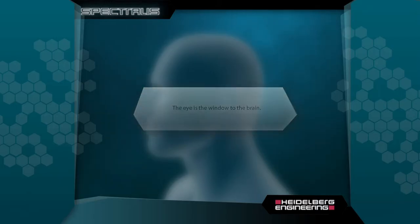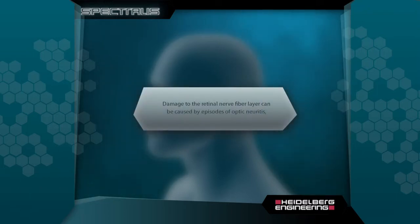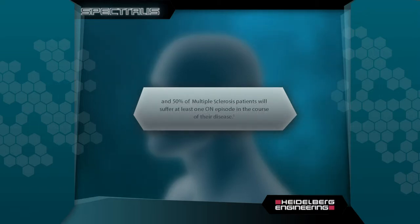The eye is the window to the brain. Damage to the retinal nerve fiber layer can be caused by episodes of optic neuritis, and 50% of multiple sclerosis patients will suffer at least one optic neuritis episode in the course of their disease.